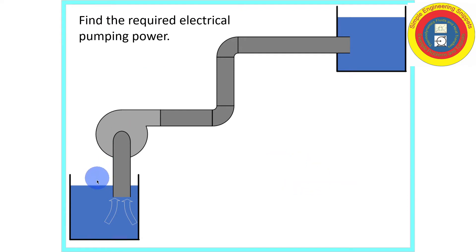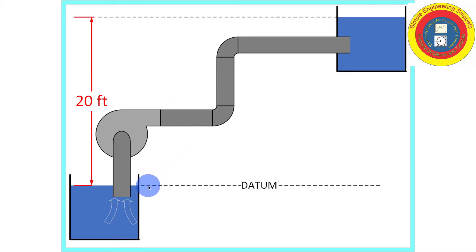We need the difference in elevation between the surfaces of the water in the two tanks. Let's select our datum. We'll use the surface of the water in the lower tank as our datum, so Z is equal to zero.